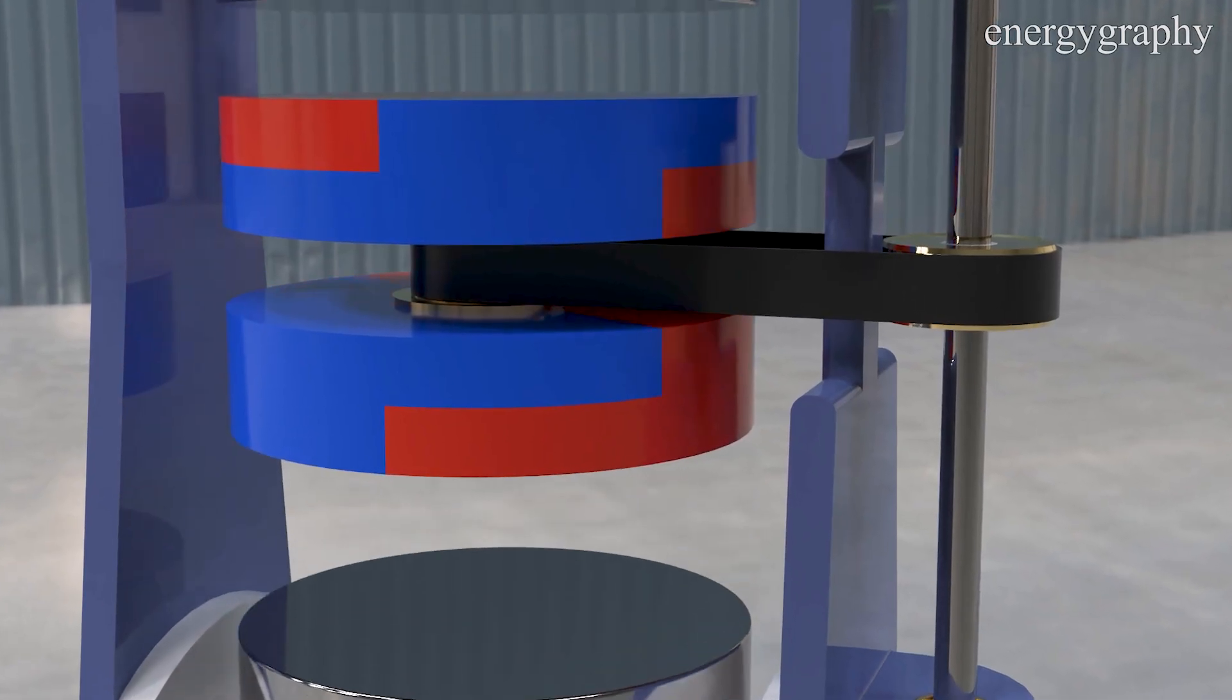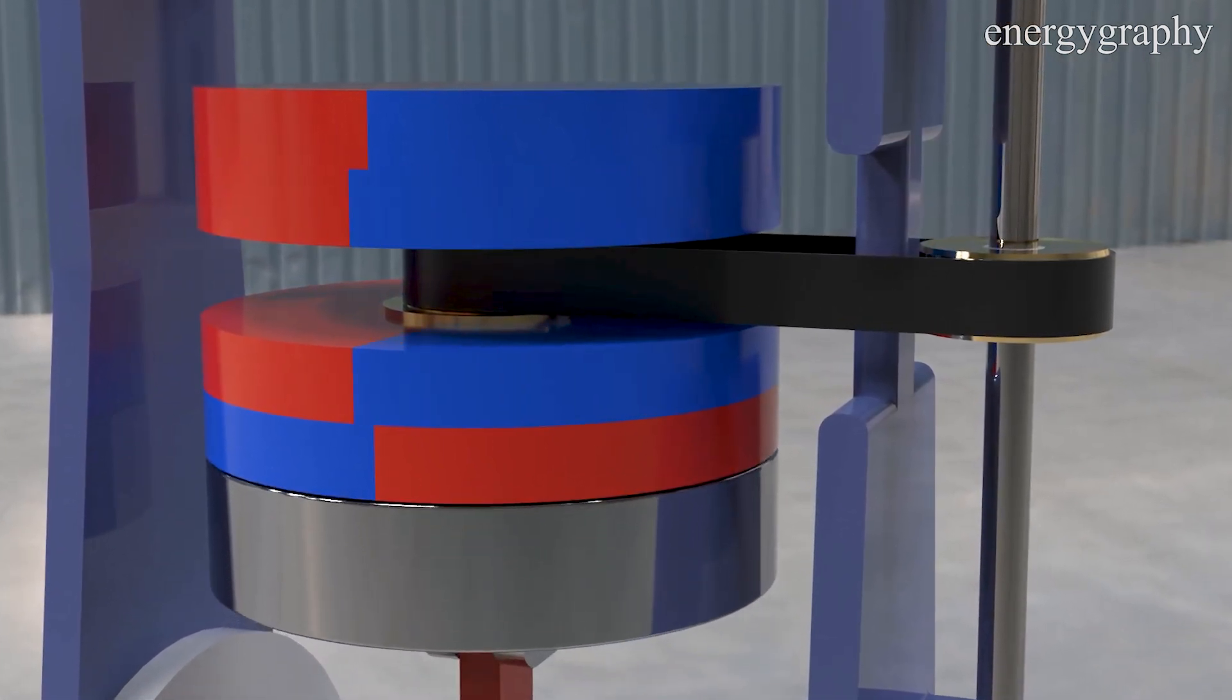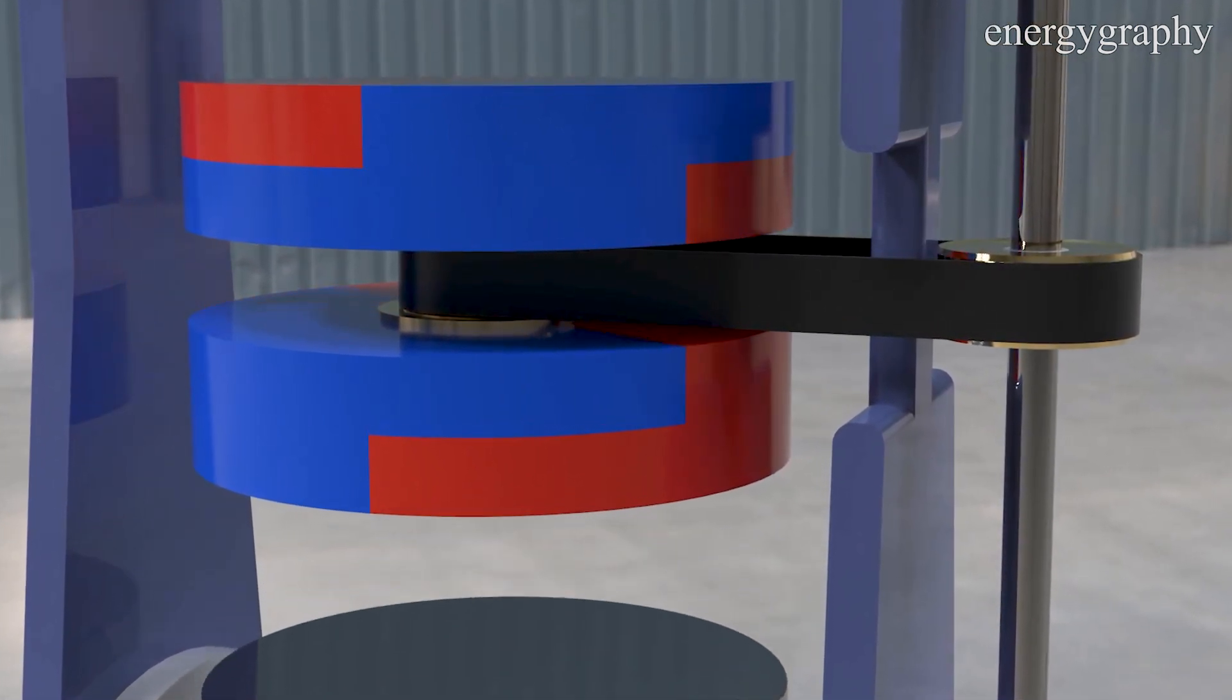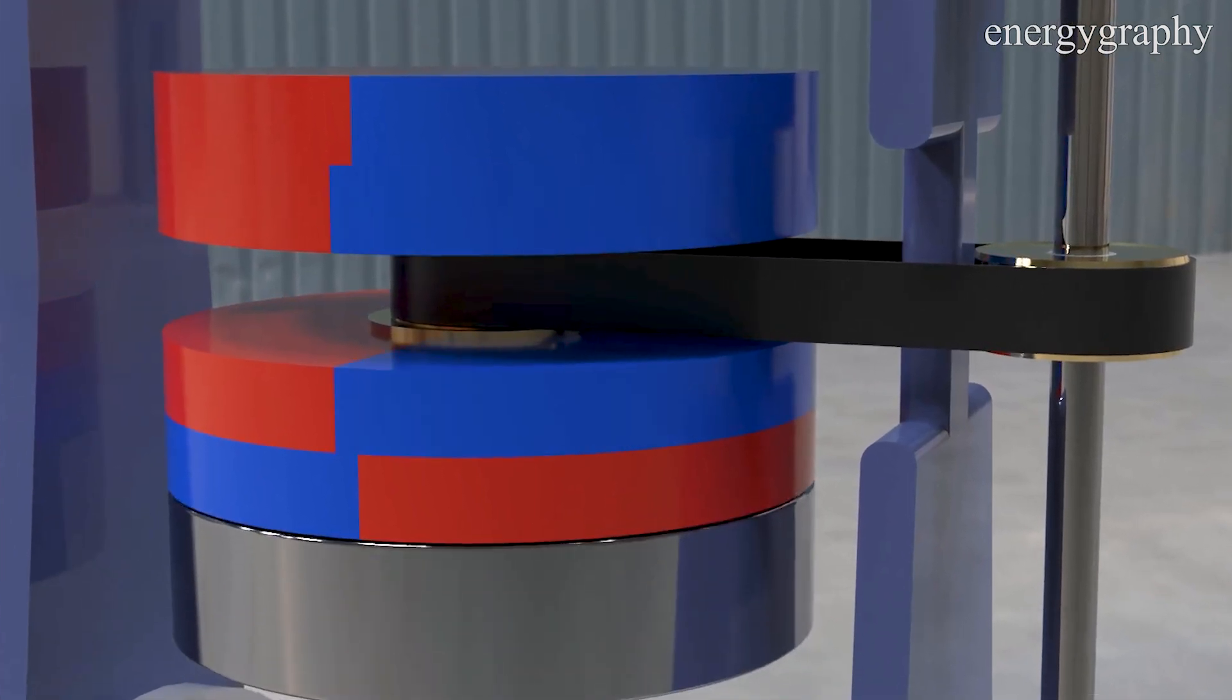In this engine, the magnets are placed between the pistons. The central magnet is rotating and the fixed magnets are located at the end of the cylinders.